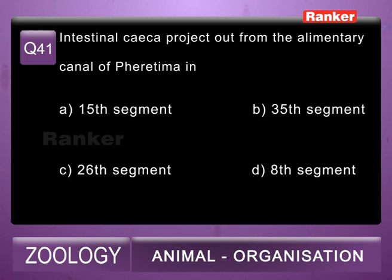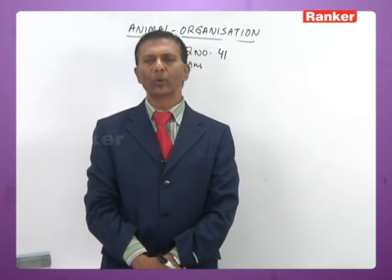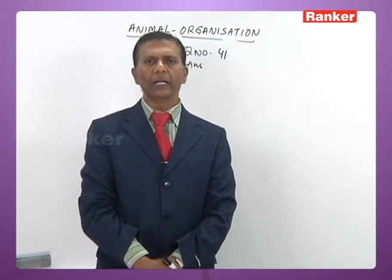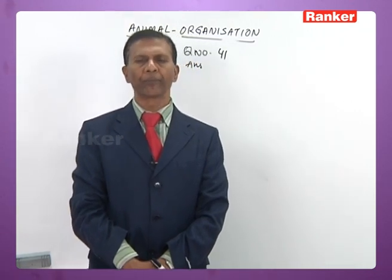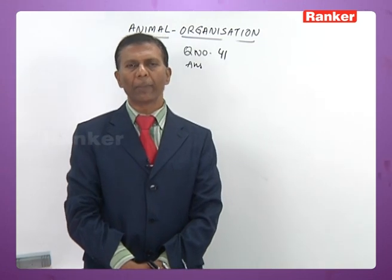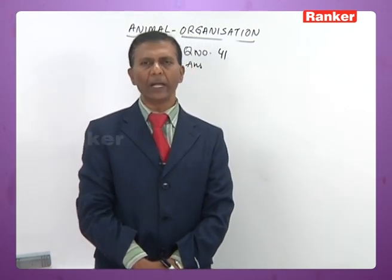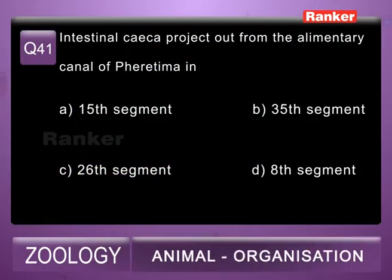Question 41: intestinal caeca project out from the alimentary canal of Pheretima in A) 15th segment, B) 35th segment, C) 26th segment, D) 8th segment. In Pheretima, the intestine is present from the 15th segment onwards. The 15th to 26th segment is the pre-typhlosolar region, 27th to about the 23rd–25th from the last is the typhlosolar region, and the remaining posterior segments form the post-typhlosolar region. In the 26th segment, the intestine gives rise to a pair of blind outgrowths called intestinal caeca, which aid in digestion of carbohydrates by secreting amylase. The 41st question correct answer is C.